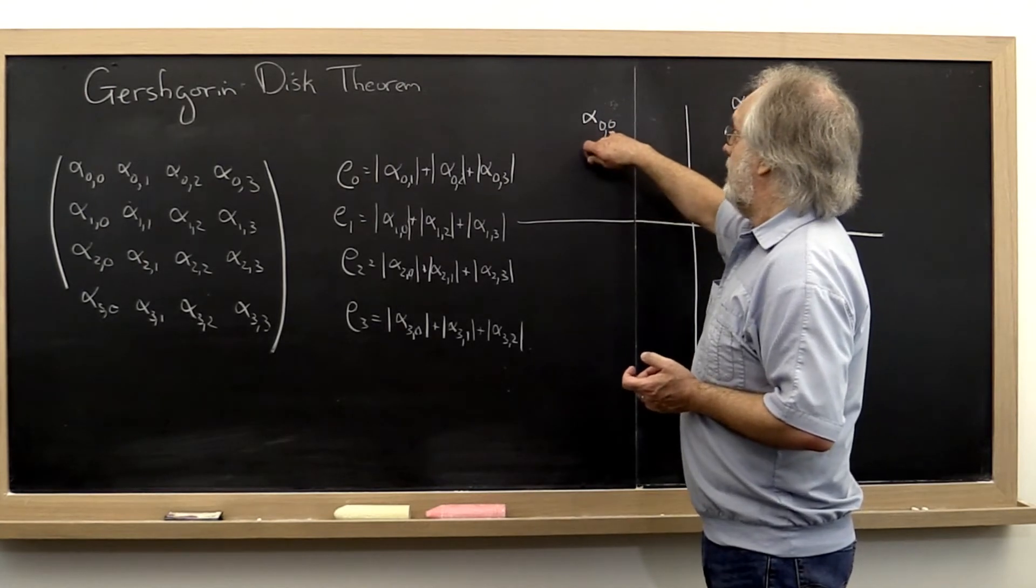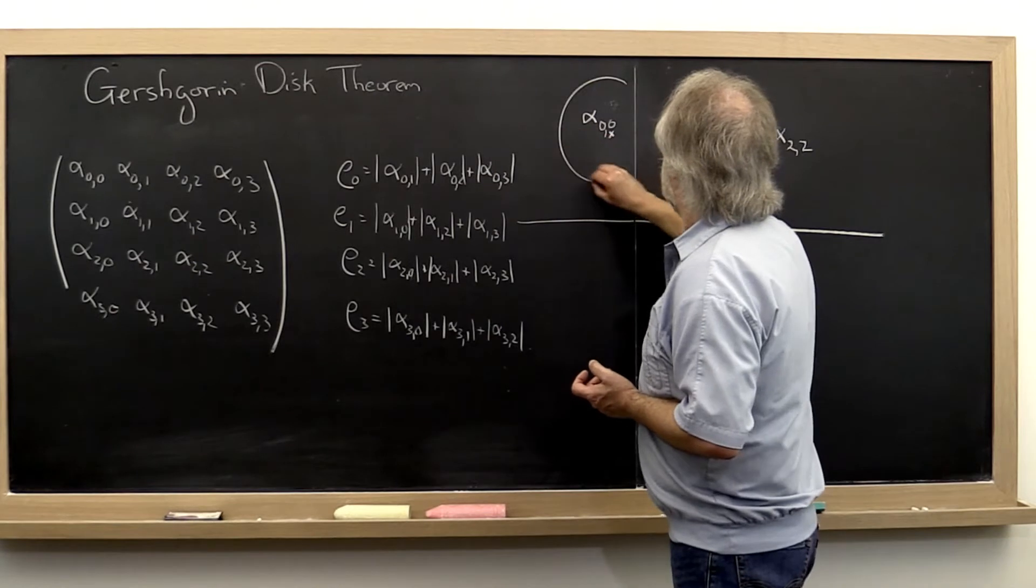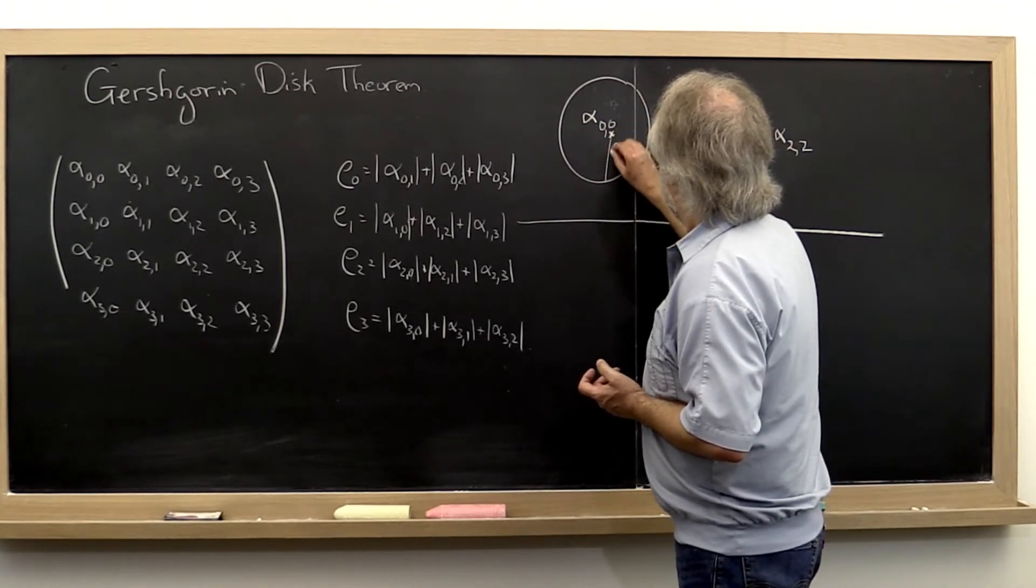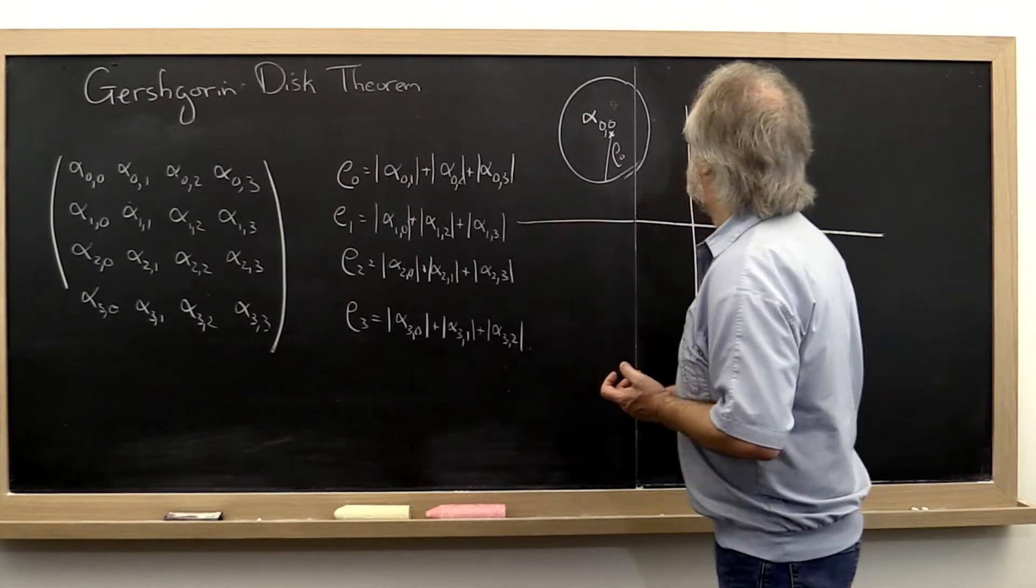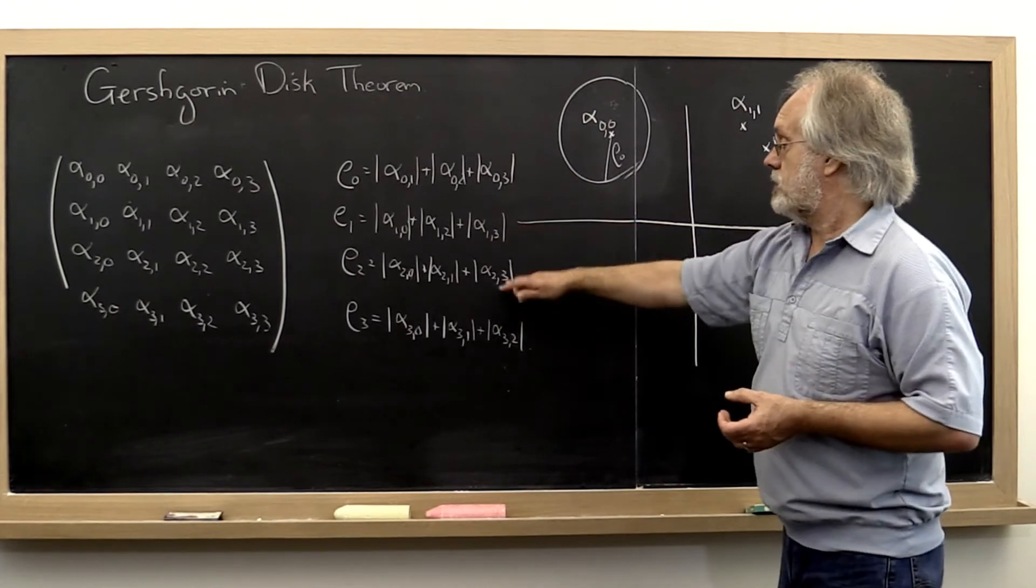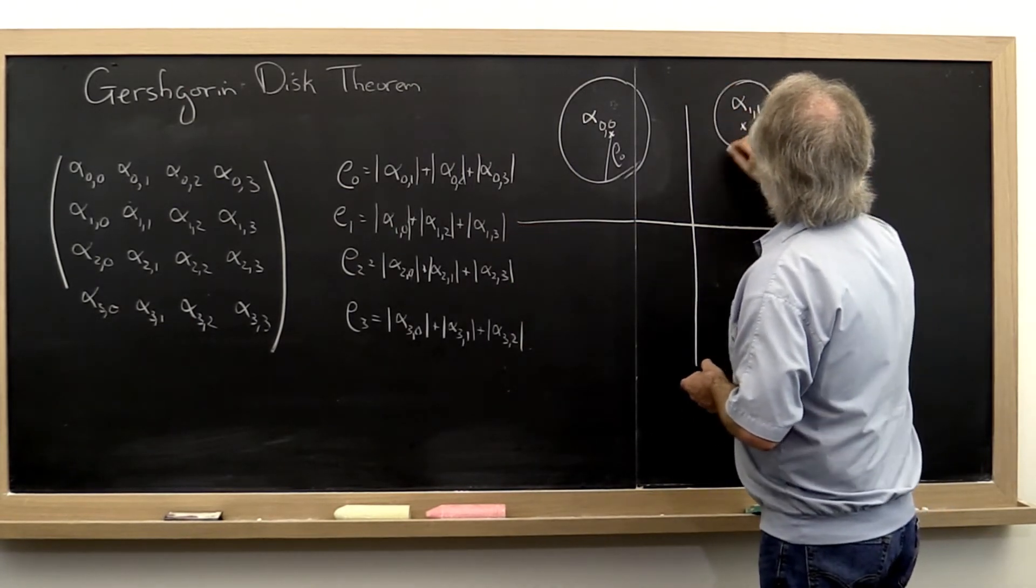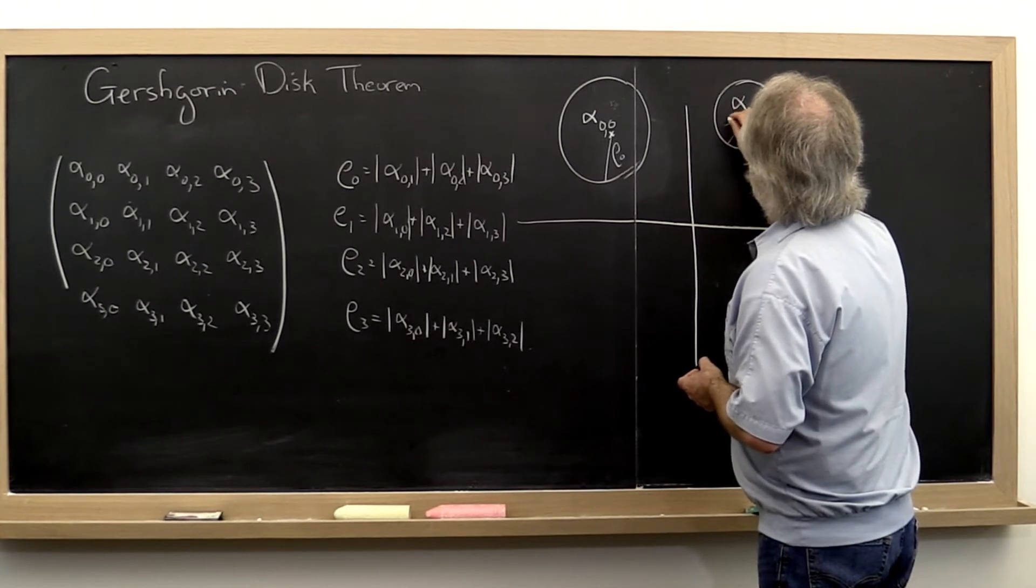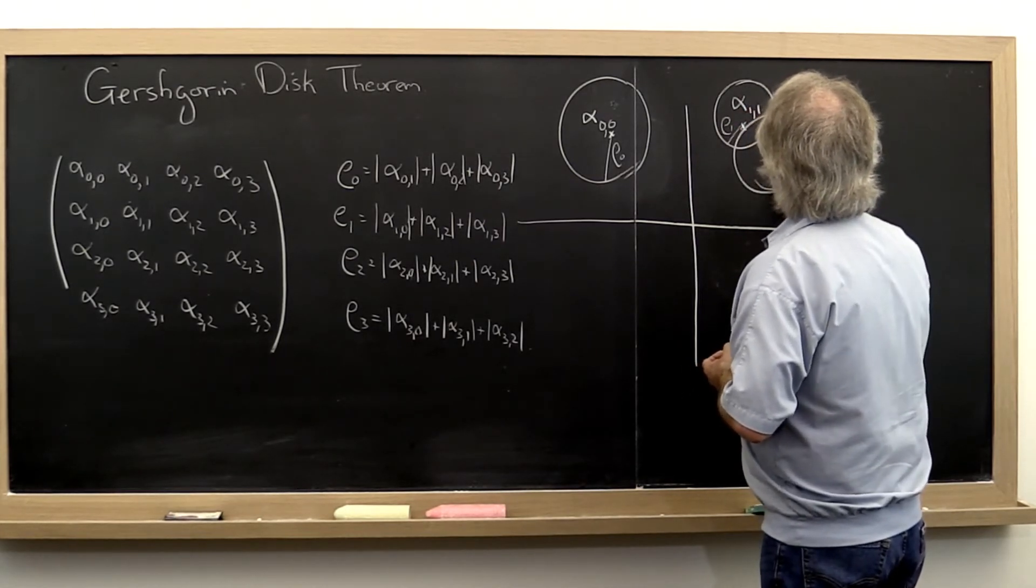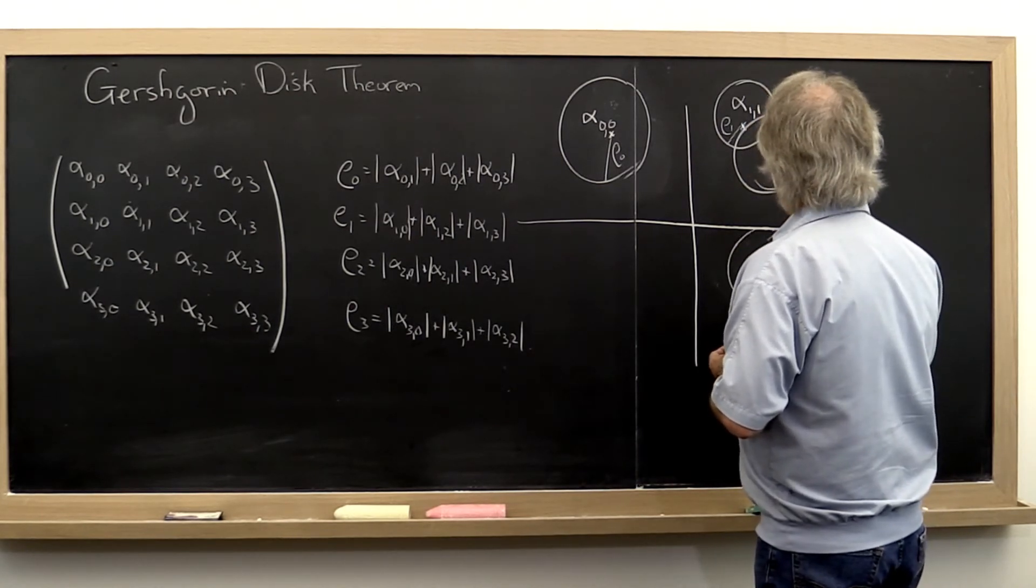If you now go to the point alpha in the complex plane and you draw a circle around that with radius row zero defined as such, and you do that for all of the diagonal elements in the corresponding radii. So here we have another disk of radius row 1 and another disk of radius row 2 and another disk of radius row 3.